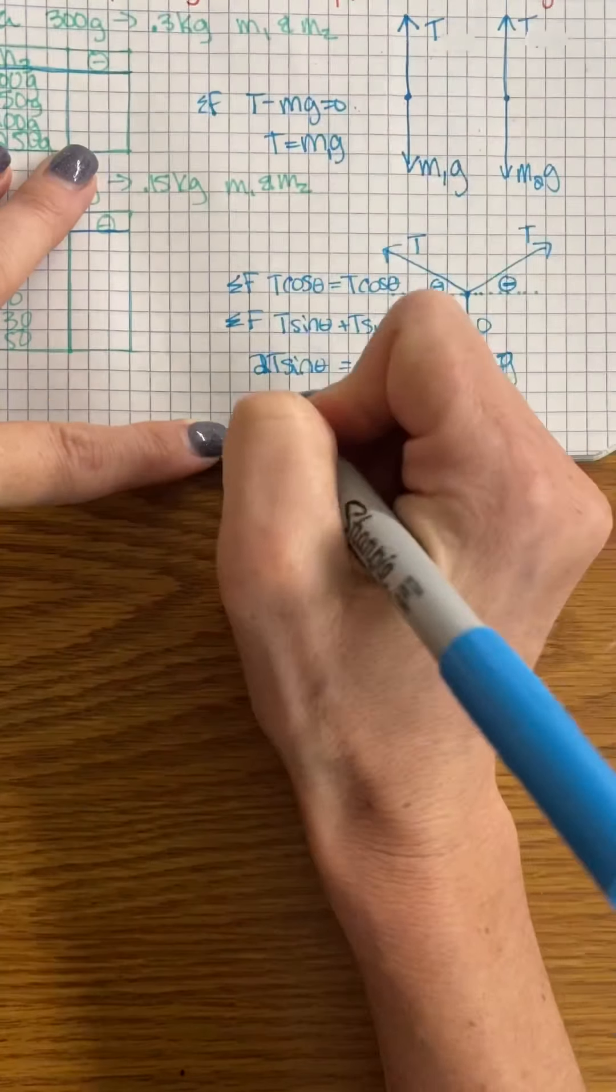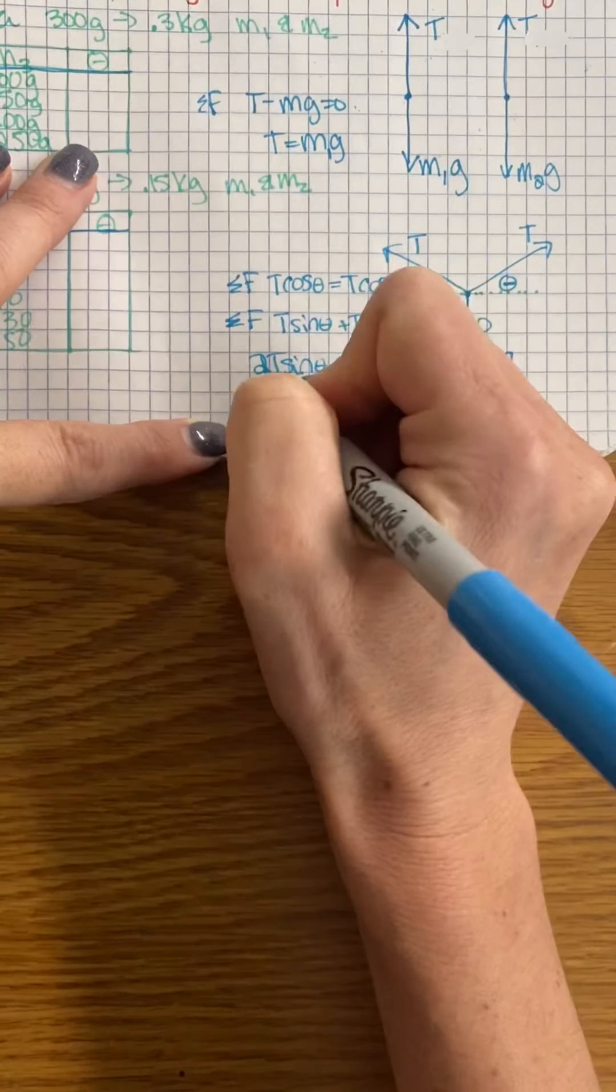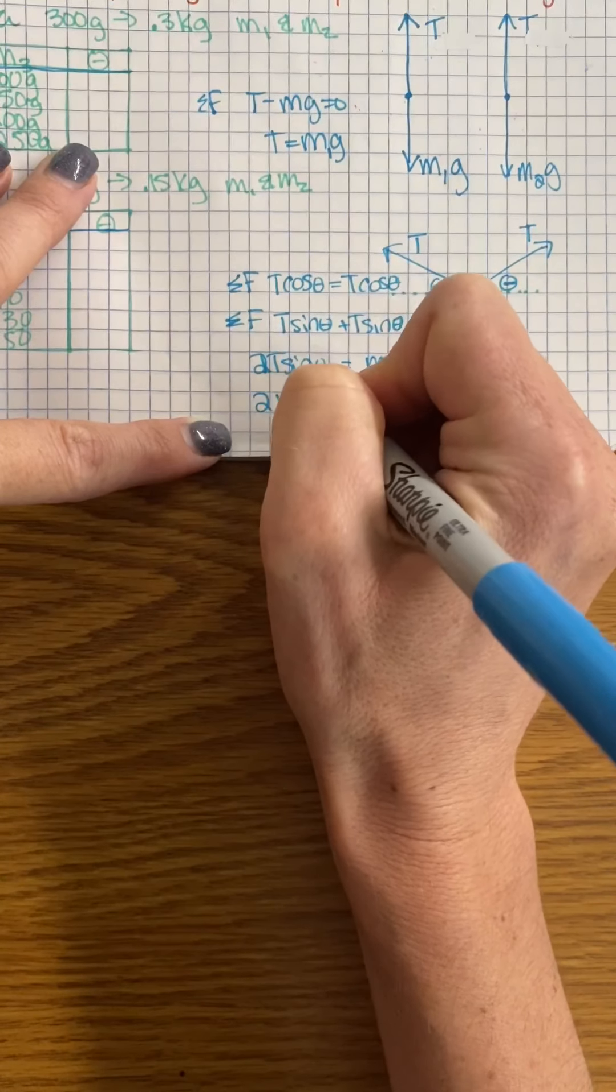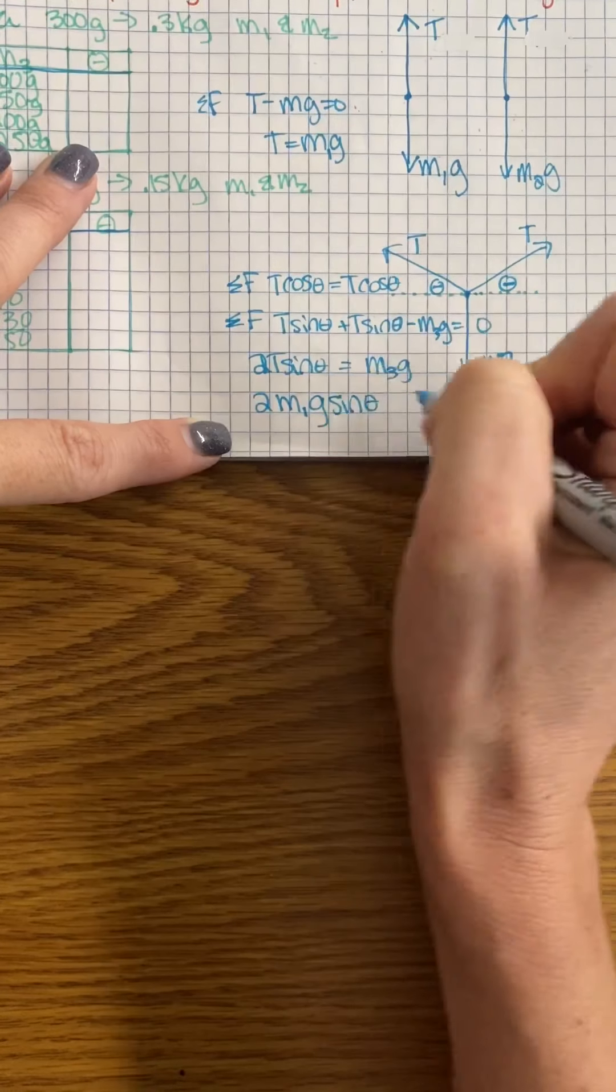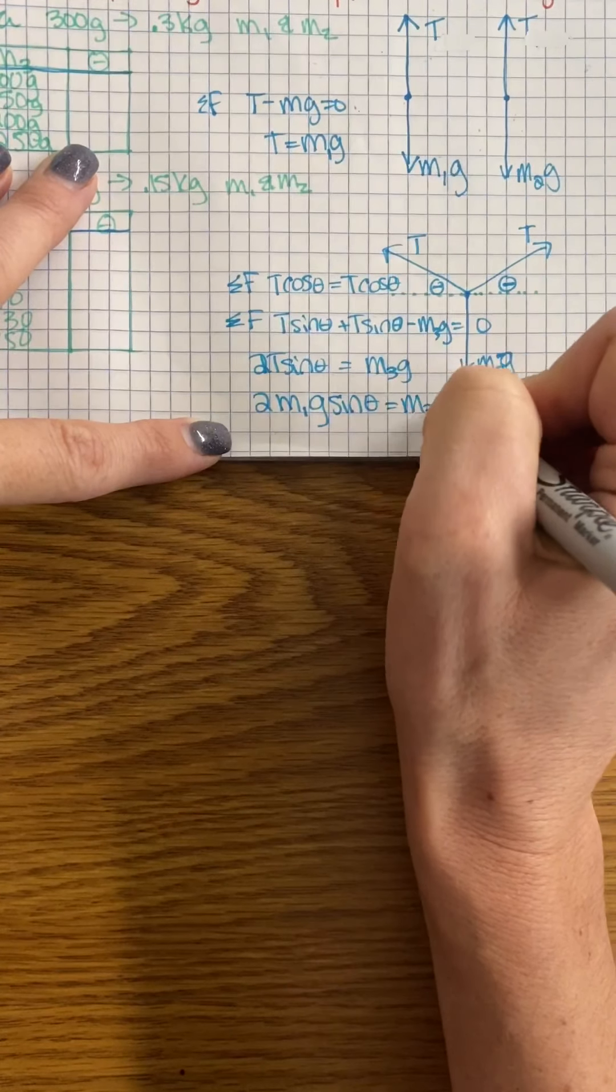And then my tension, we identified up here, is going to be equal to M1g sine theta... M3g.